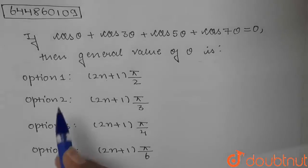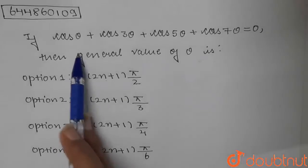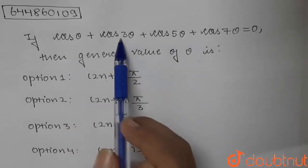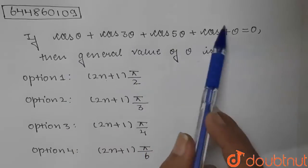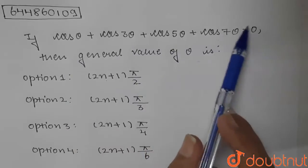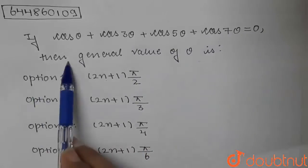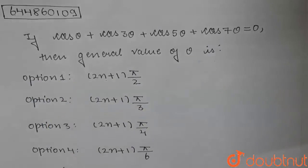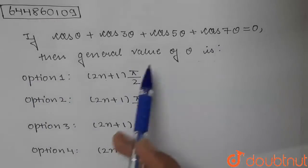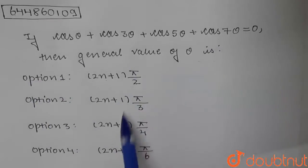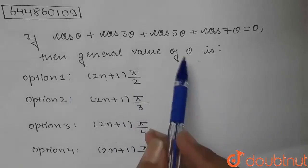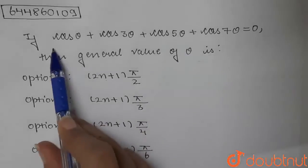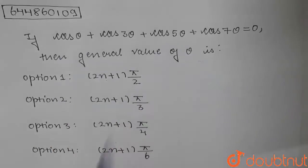Hello students. The question is: if cos θ + cos 3θ + cos 5θ + cos 7θ = 0, then what is the general value of θ? We are given four options. We need to find which of these four is the general value of theta. Let's get started.